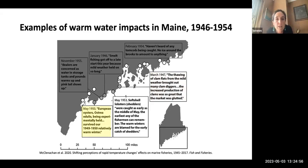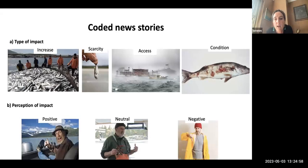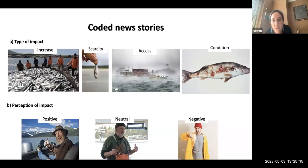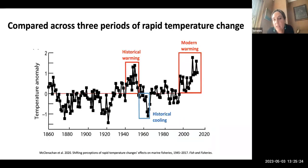We collected hundreds of these articles and coded them for the type of impacts — increase, scarcity, access, or condition — and the perception of those impacts by the fishing community, whether generally positive, generally negative, or neutral. We then compared these across three periods of rapid temperature change: historical warming in the 1940s and 50s, historical cooling, and the modern warming.